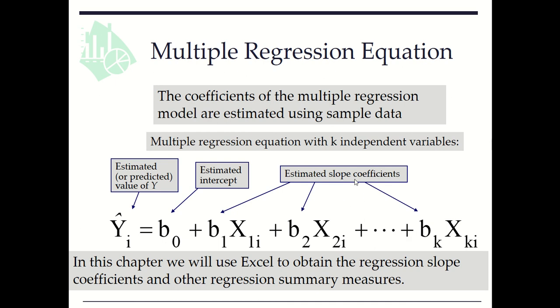So here we have ŷi, the estimated or predicted value of y, equals b0 estimated intercept plus b1 times x1i plus b2 x2i plus etc plus bk xki, where b1 through bk are estimated slope coefficients.